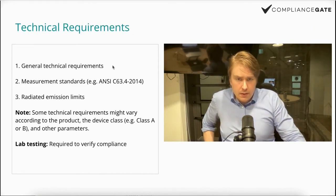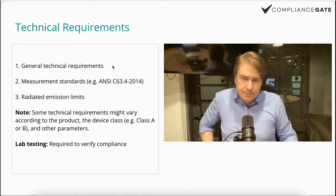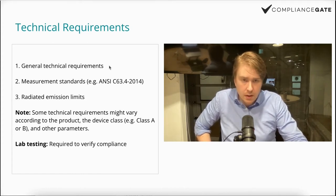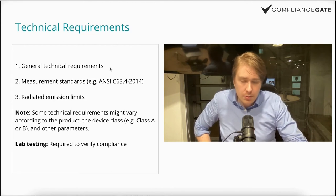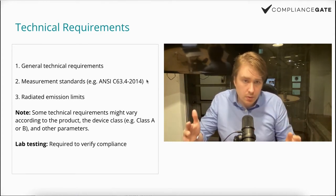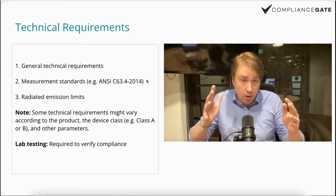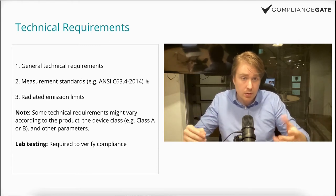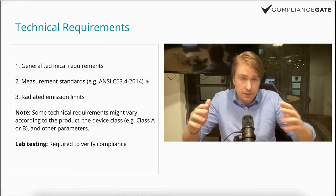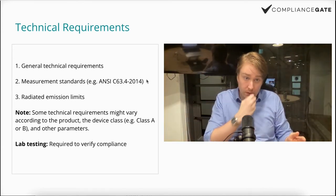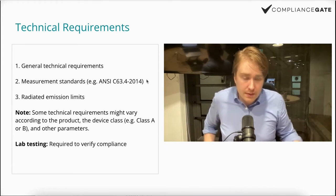Let's look into the technical requirements. They can be quite vague — you have to comply with the general technical requirements. Further information can be found on the FCC website along with measurement standards. Essentially what this comes down to is ensuring that your device, such as this microphone, doesn't have any Wi-Fi transmitter, Bluetooth receiver, or anything that sends waves into the air that could potentially interfere with other radio frequencies — that's the core of the FCC's mission.